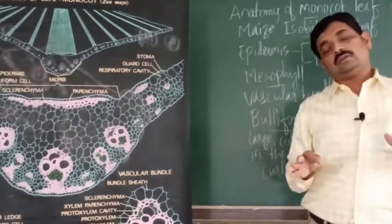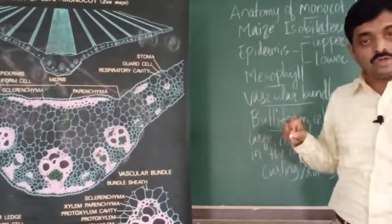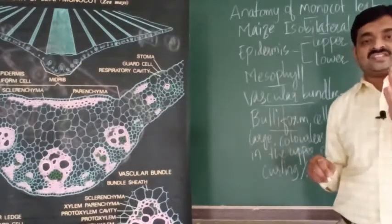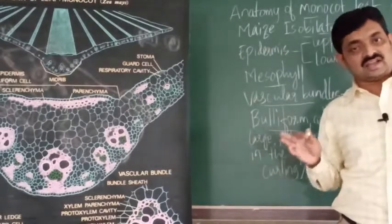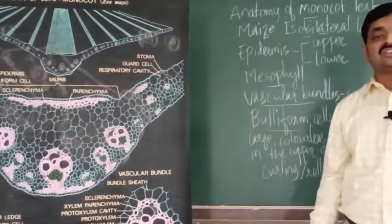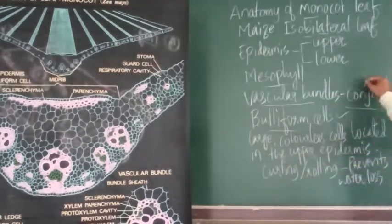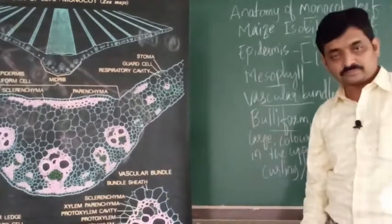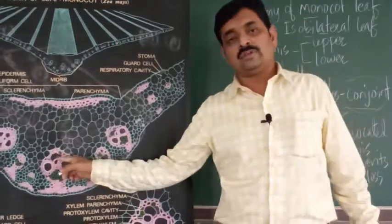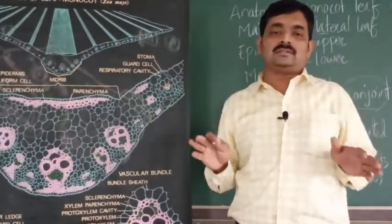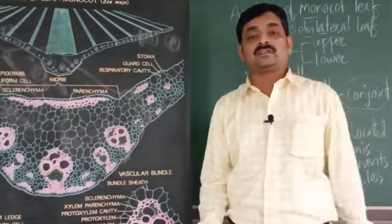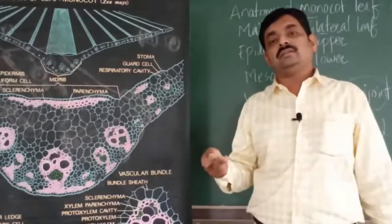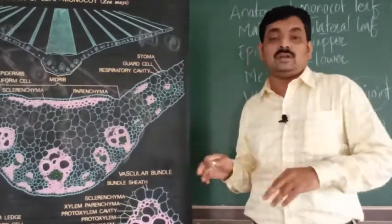Vascular bundles of the leaf are located in the veins. The mid rib has large vascular bundles; peripheral veins have small vascular bundles. The vascular bundles are conjoint because phloem and xylem are present in the same bundle and lie in the same radius. Phloem is on the lower side, xylem is on the upper side. This may appear as a five-mark question: explain the anatomy of monocot leaf.